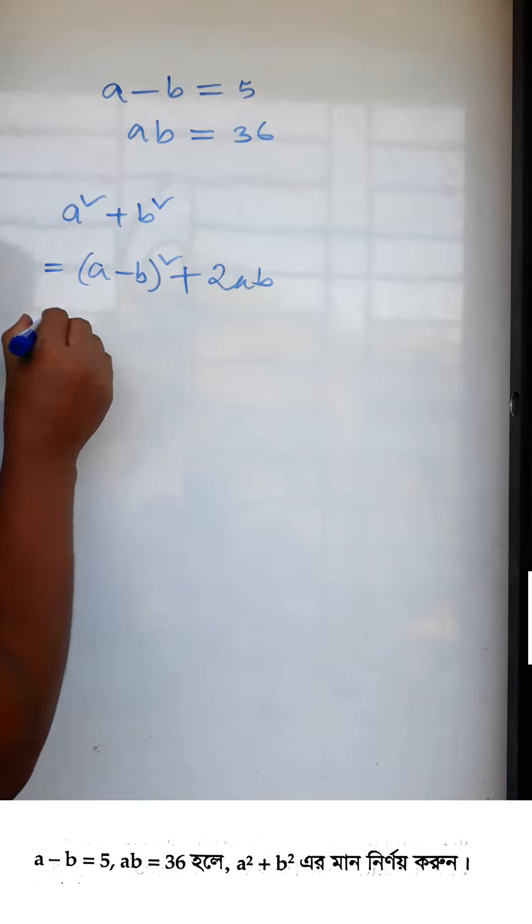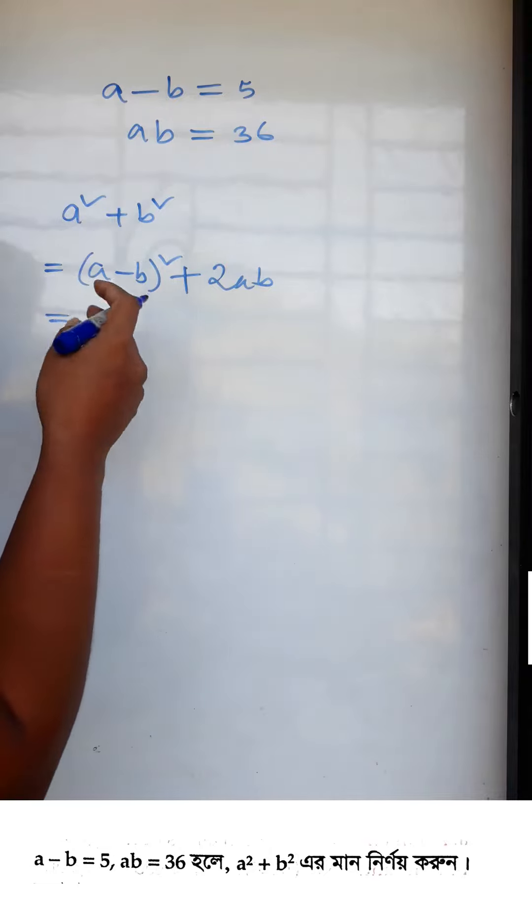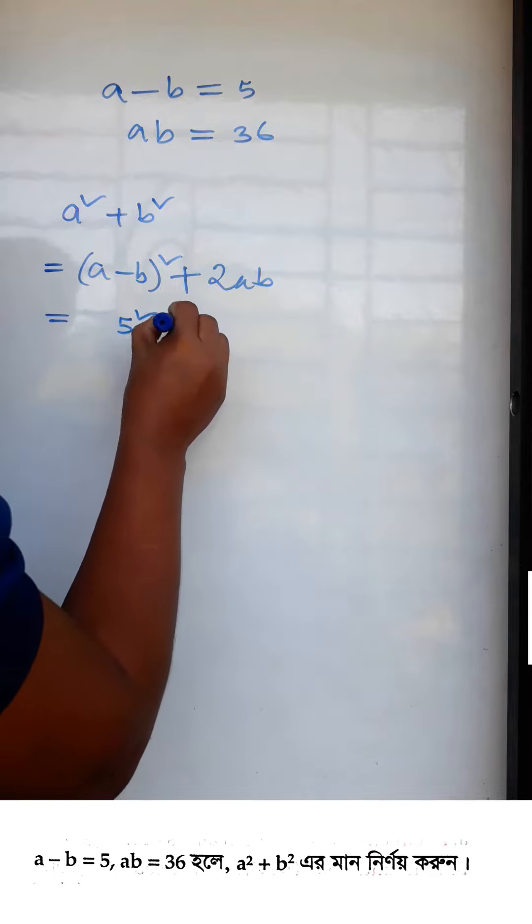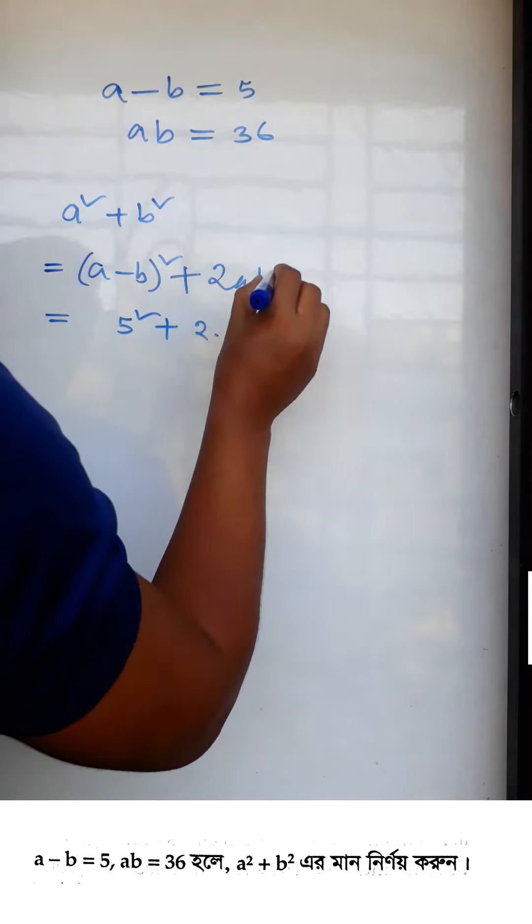This equals 5 squared plus 2 into 36, which gives us 25 plus 72.